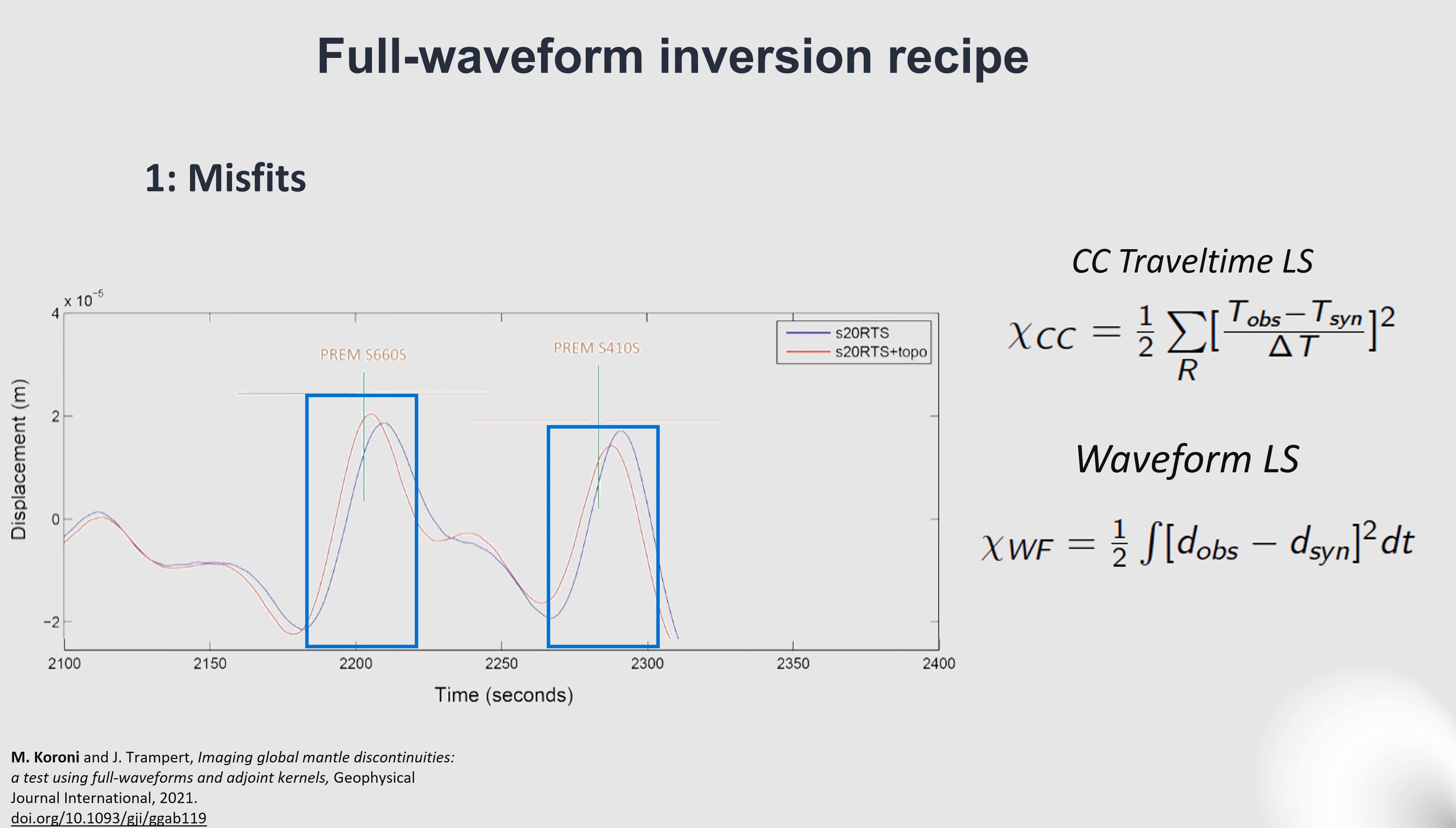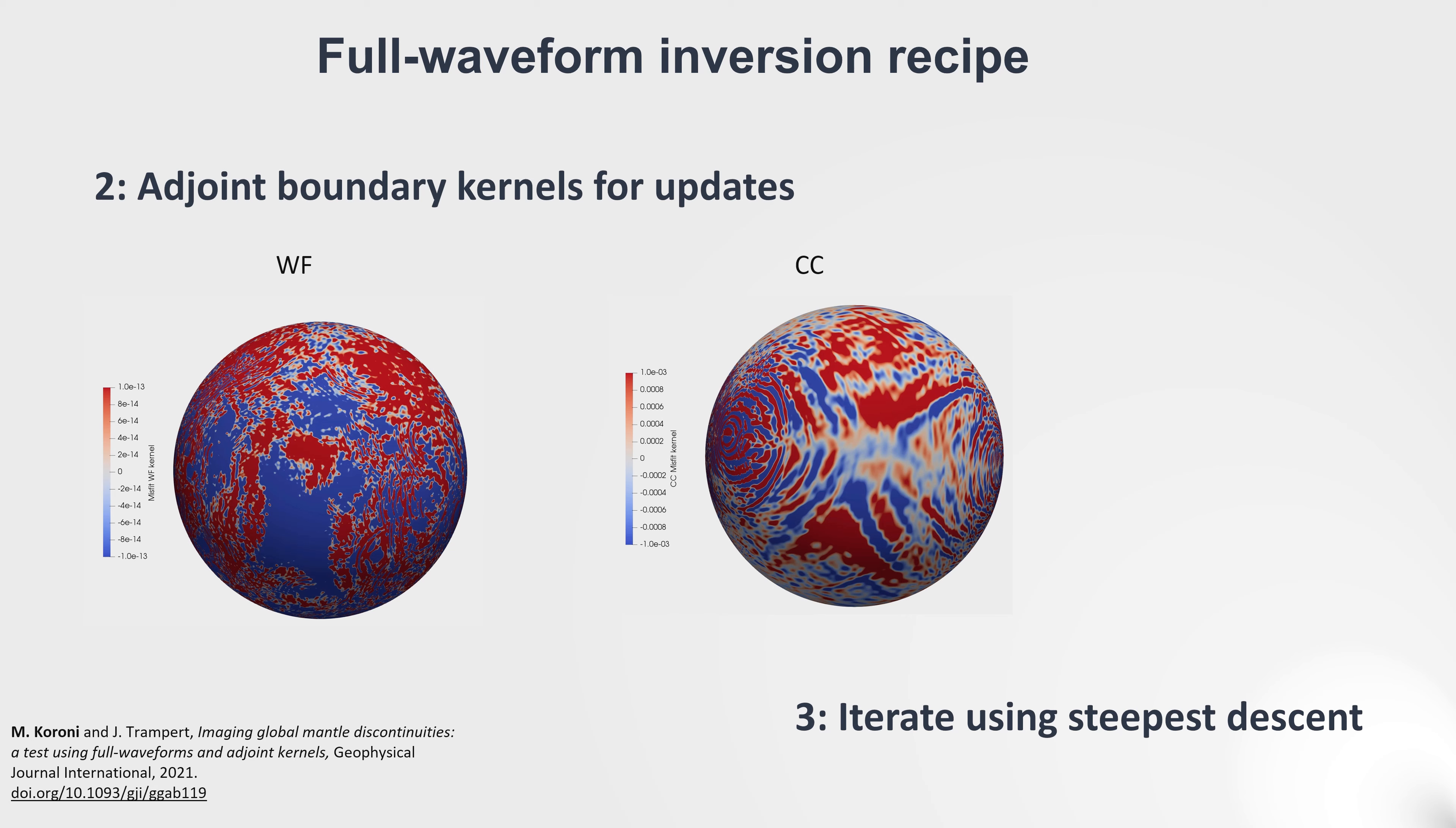Misfit functions are based on least squares, and we do that for cross-correlation travel time and waveform misfits. With adjoint boundary kernels and an iteration process, we little by little introduce depth variations to the reference discontinuities.